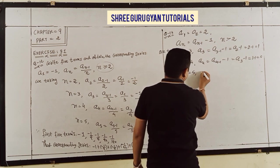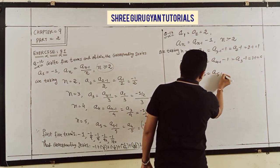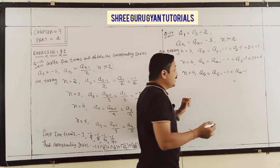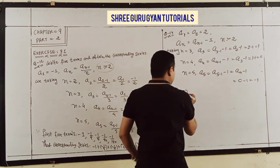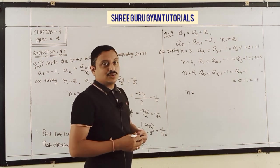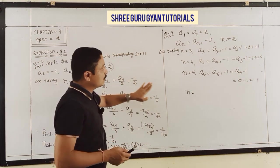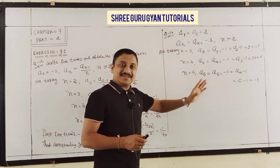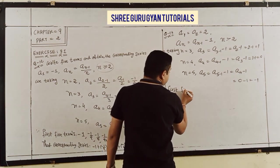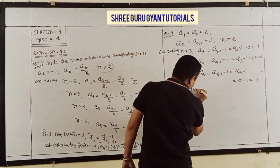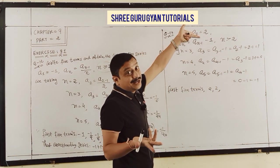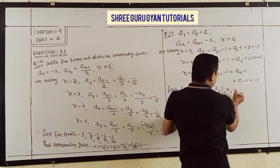For n = 5: a5 = a4 minus 1. What is a4? It is 0, so a5 = 0 minus 1 = minus 1. I want to find only the first 5 terms so we stop here. The first 5 terms are: a1 = 2, a2 = 2, then 1, 0, minus 1.